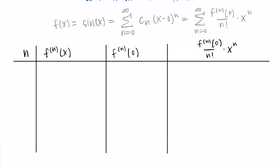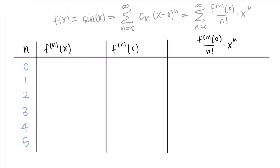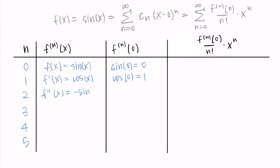To find our specific coefficients for sine, I'm going to make a table and find the coefficients for n from zero to five — just enough to see a pattern. For n equals zero, the function is sine x and sine at zero is zero. For n equals one, the first derivative of sine is cosine, and cosine at zero is one. For n equals two, the derivative of cosine is negative sine, and evaluating negative sine at zero gives zero.